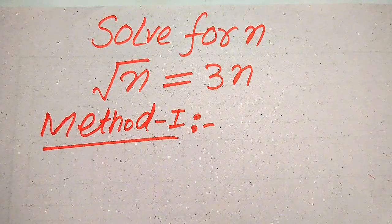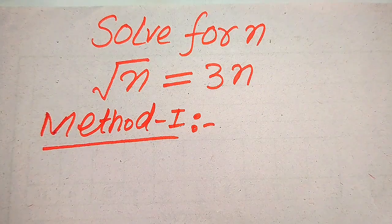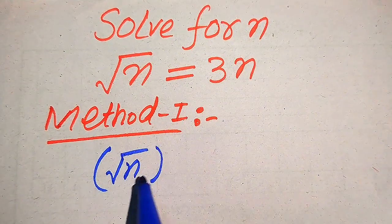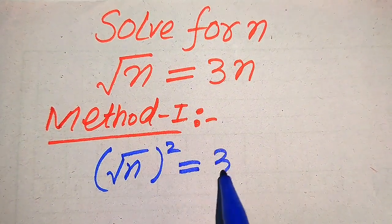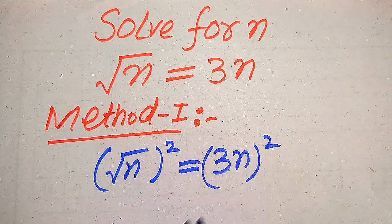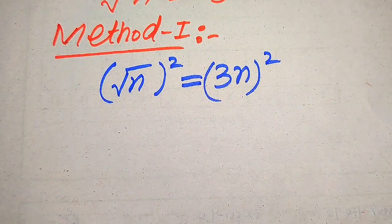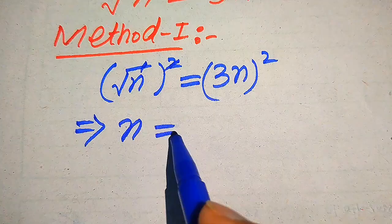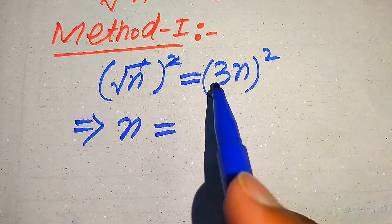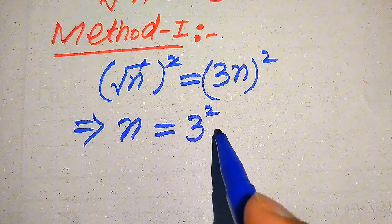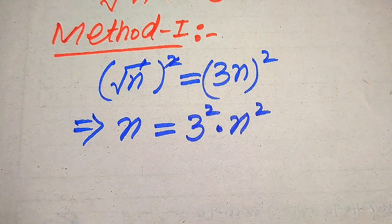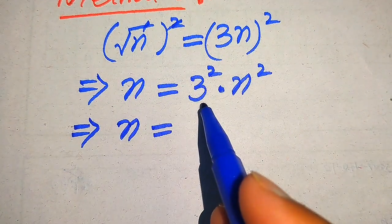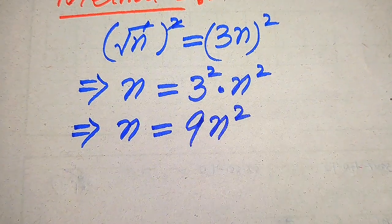Now we move towards our first method. In the first method we need to take squaring on both sides, so it will be written as square root of n, whole squared, equals 3 times of n, whole squared. In the left-hand side, the square and square root cancel, and we get n equals 3 squared multiplied by n squared, which becomes 9 times n squared.